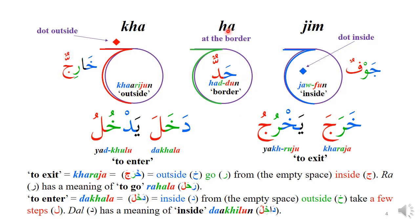As I have told you, HA means at the border. The dot of the JIM is inside the border, so JIM has the meaning of inside — 'jaufun' means inside in Arabic. And KHA, because the dot is outside, means outside — 'harijun' means outside. You can see the dot is outside of the HA shape. If you know these meanings — that JIM means inside, HA means at the border, and KHA means outside — many words containing JIM and KHA become very easy to understand.